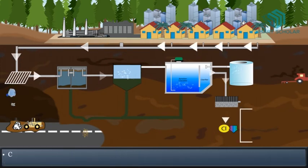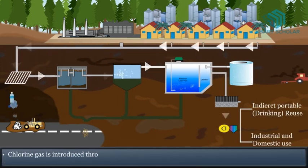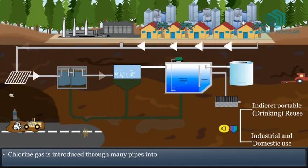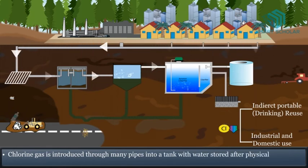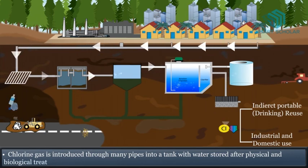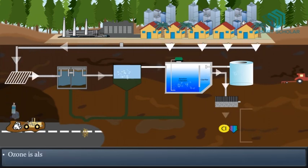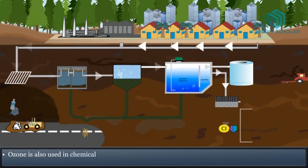Chlorine gas is introduced through many pipes into a tank with water stored after physical and biological treatment. Ozone is also used in chemical purification of water.